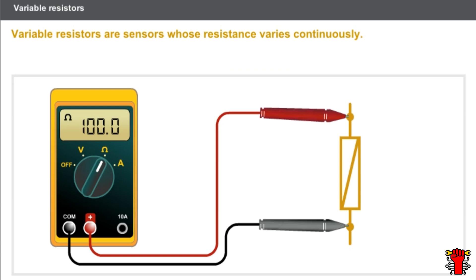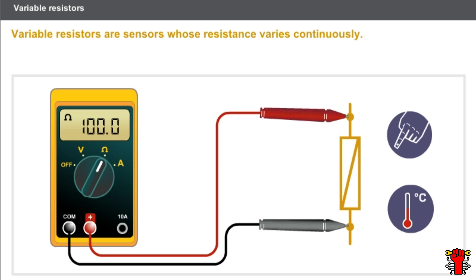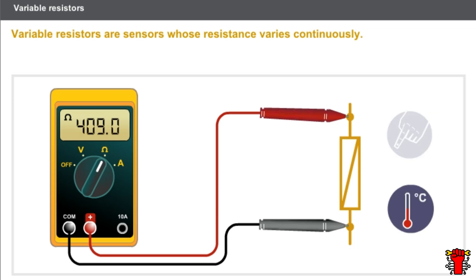Variable resistors are sensors whose resistance varies continuously. These resistances vary in two ways: due to the effect of a mechanical cause, such as the position of a control, or due to the effect of a physical cause, such as temperature.